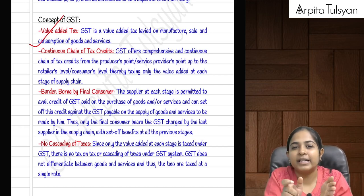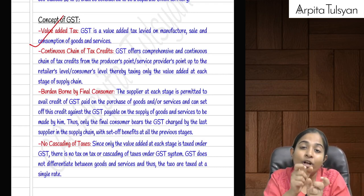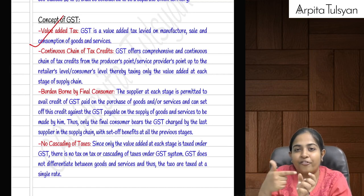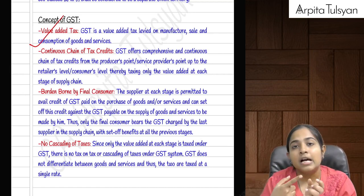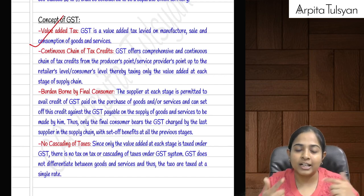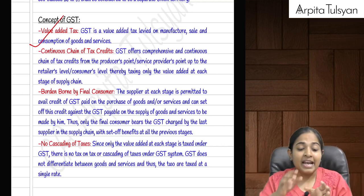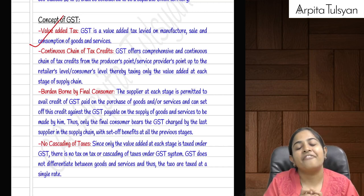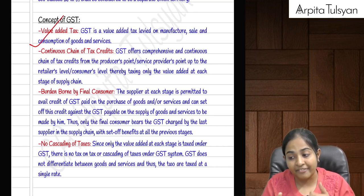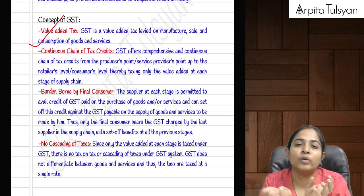After the manufacturer sells to the wholesaler, the wholesaler does some value addition and sells to the retailer. Whatever value addition — the profit added — by the wholesaler, tax will be paid on that. Similarly the retailer also adds value and when selling to the ultimate consumer, taxes are on that value addition. They are not taxing the entire selling price again; GST is levied only on the value addition, which is possible by giving input tax credit.